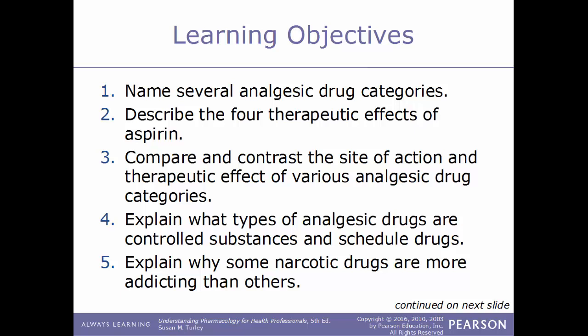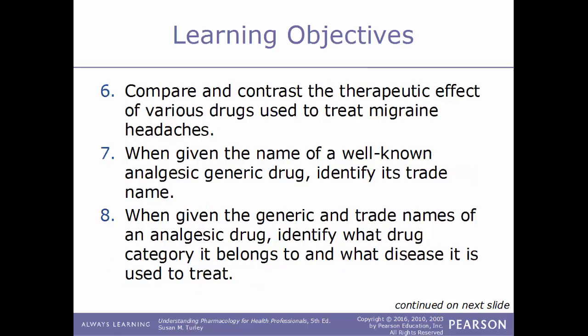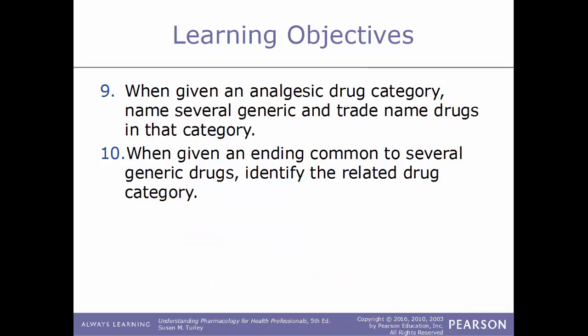Explain what types of analgesic drugs are controlled substances and scheduled drugs. Explain why some narcotic drugs are more addicting than others. Compare and contrast the therapeutic effect of various drugs used to treat migraine headaches. When given the name of a well-known analgesic generic drug, identify its trade name, identify what drug category it belongs to, what disease it is used to treat, and when given a drug category, name several generic and trade name drugs in that category. Lastly, when given an ending common to several generic drugs, identify the related drug category.